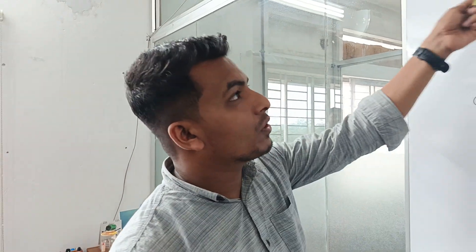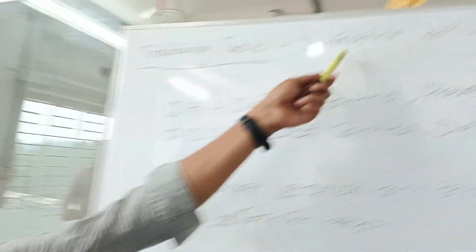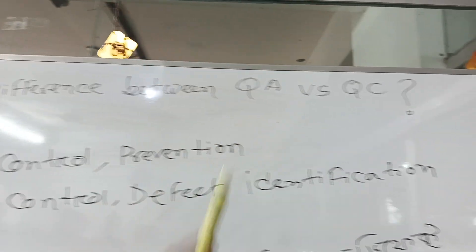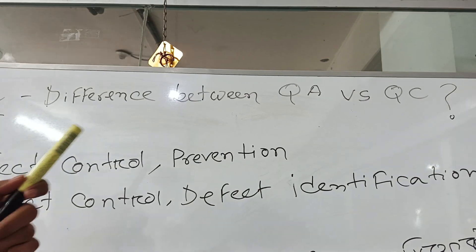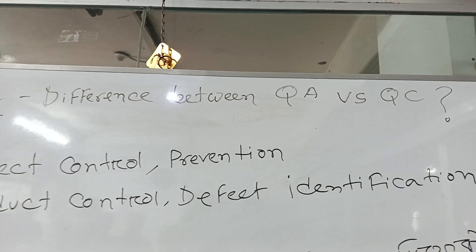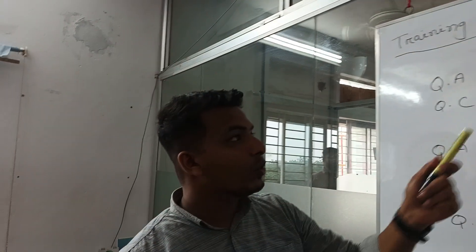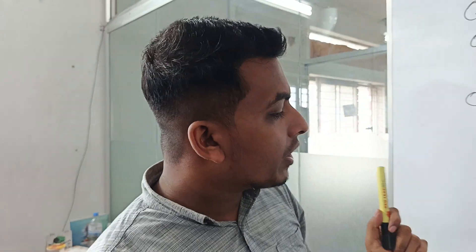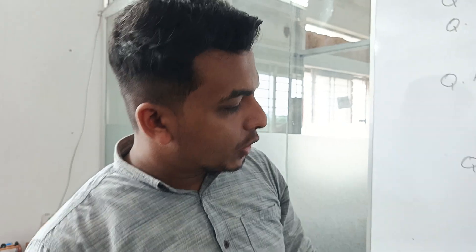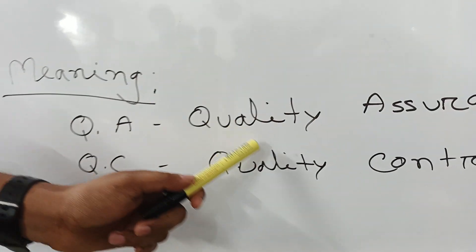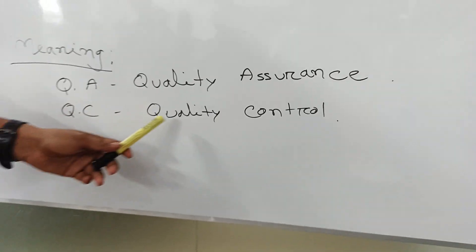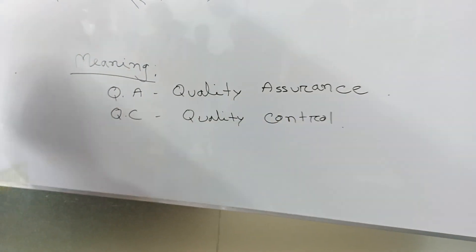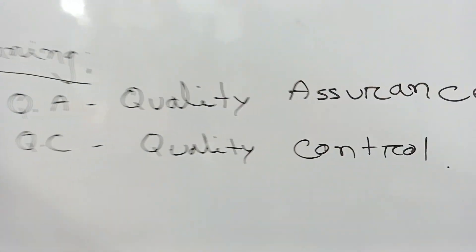Assalamualaikum. Today we are going to talk about the difference between QA versus QC. QA is quality assurance and QC is quality control. These are two types: QA and QC.